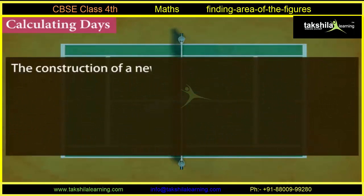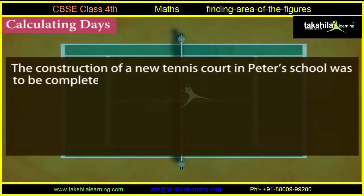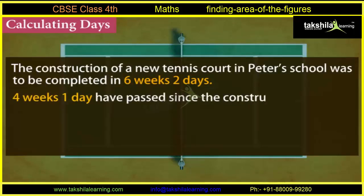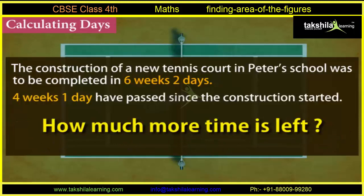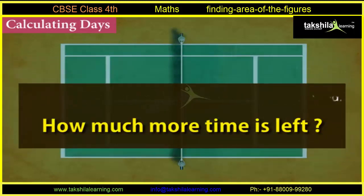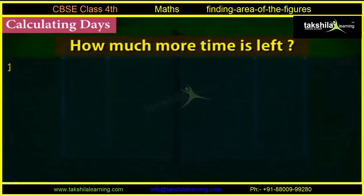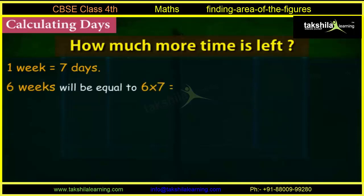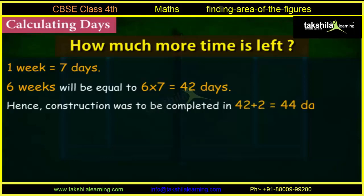The construction of a new tennis court in Peter's school was to be completed in six weeks two days. Four weeks one day have passed since the construction started. How much more time is left? We know that one week is equal to seven days, so six weeks will be equal to six into seven, which is equal to 42 days. Hence, construction was to be completed in 42 plus 2, which is equal to 44 days.